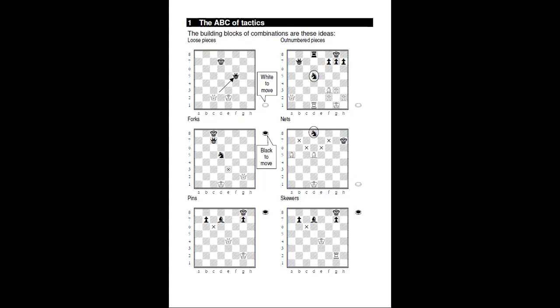In the diagram, if the black knight goes to e3, it is attacking the white king — it's check, so the king must move — but the knight is also attacking the queen. It's a double attack, a fork: the knight is attacking two pieces at once.